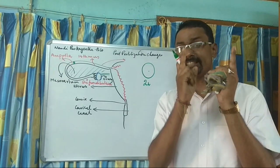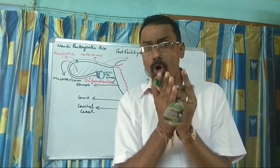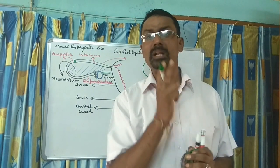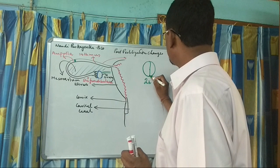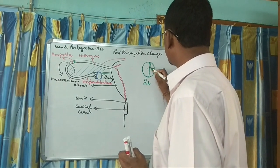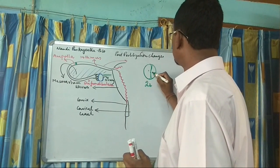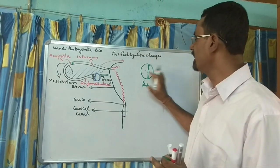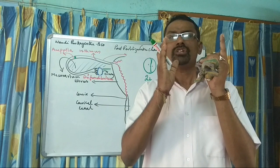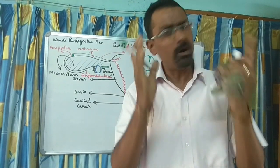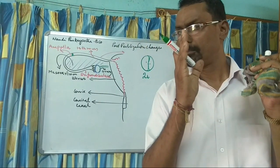What is cleavage? It is the division of the zygote, and it forms two blastomeres — one is a little bit bigger and another is a little bit smaller. It takes around 13 hours for the first cleavage.